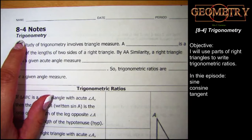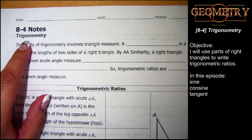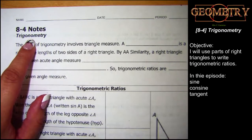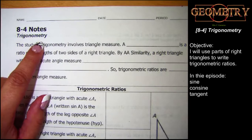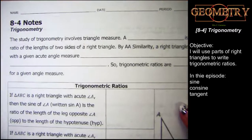TRI means three — like triangle. 'Gon' is another way to say angle. So polygon means many-angled, hexagon means six-angle, pentagon means five-angle, trigon means three-angle — we just say triangle instead. The extra 'o' is like 'of,' and 'metri' is a measure of something. So trigonometry literally means the measure of three-angled things — the measure of triangles.